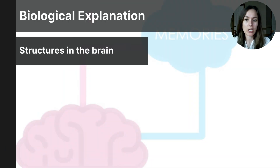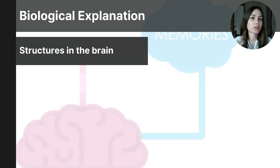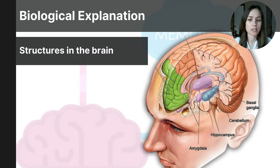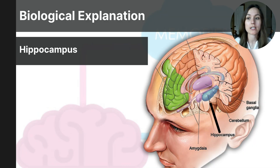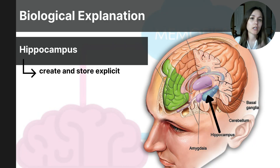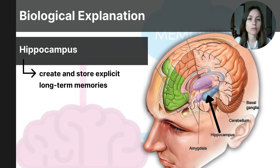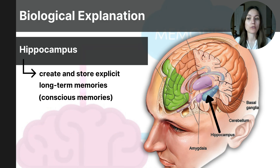You already know that the hippocampus is responsible for long-term memory, but there are many other aspects of memory and many other brain structures involved in information processing. First and foremost, the hippocampus is responsible for creating and storing explicit long-term memories — memories that you're consciously aware of. The hippocampus is responsible for turning those short-term memories into long-term memories.